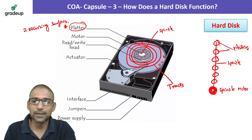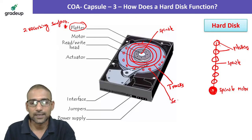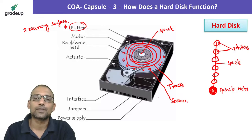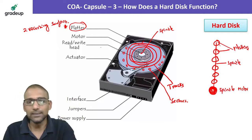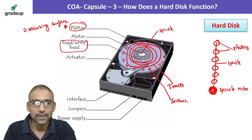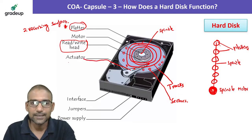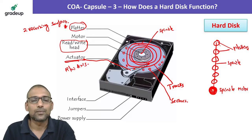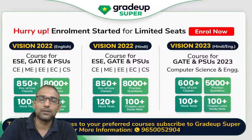Tracks are further partitioned into sectors. Data is read or written through the read/write head. The read/write head is attached to the read/write axis, also called the actuator.